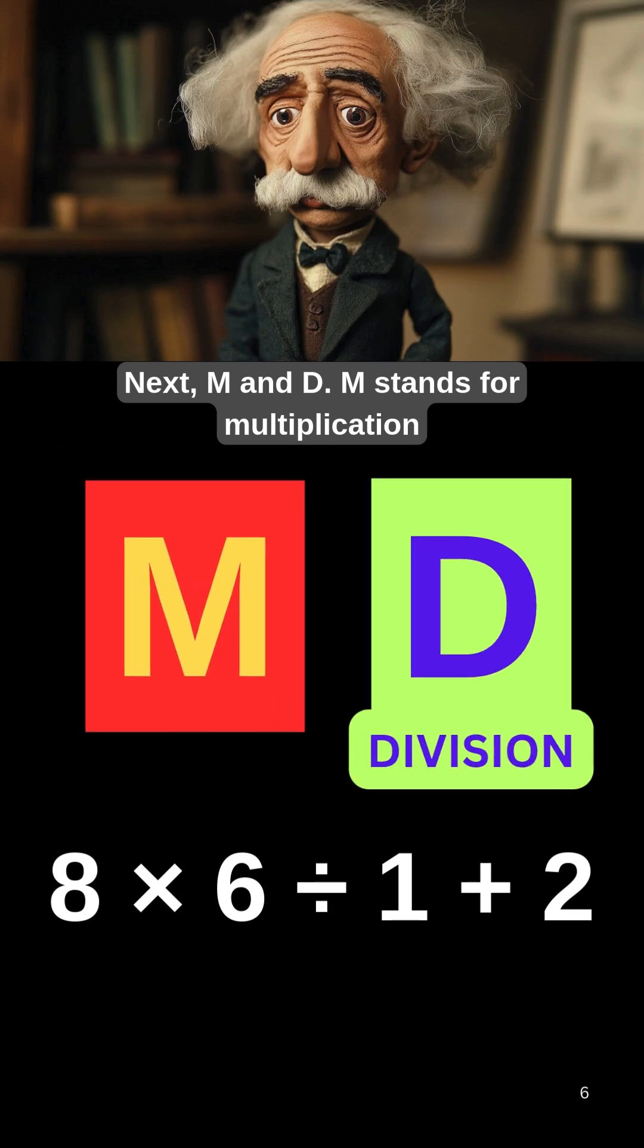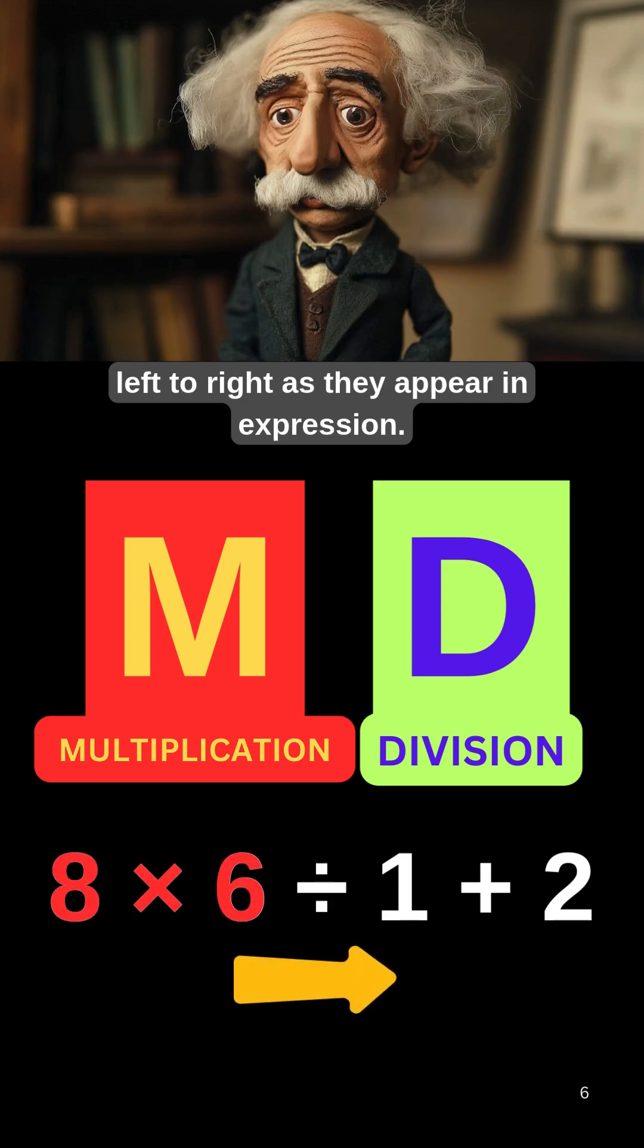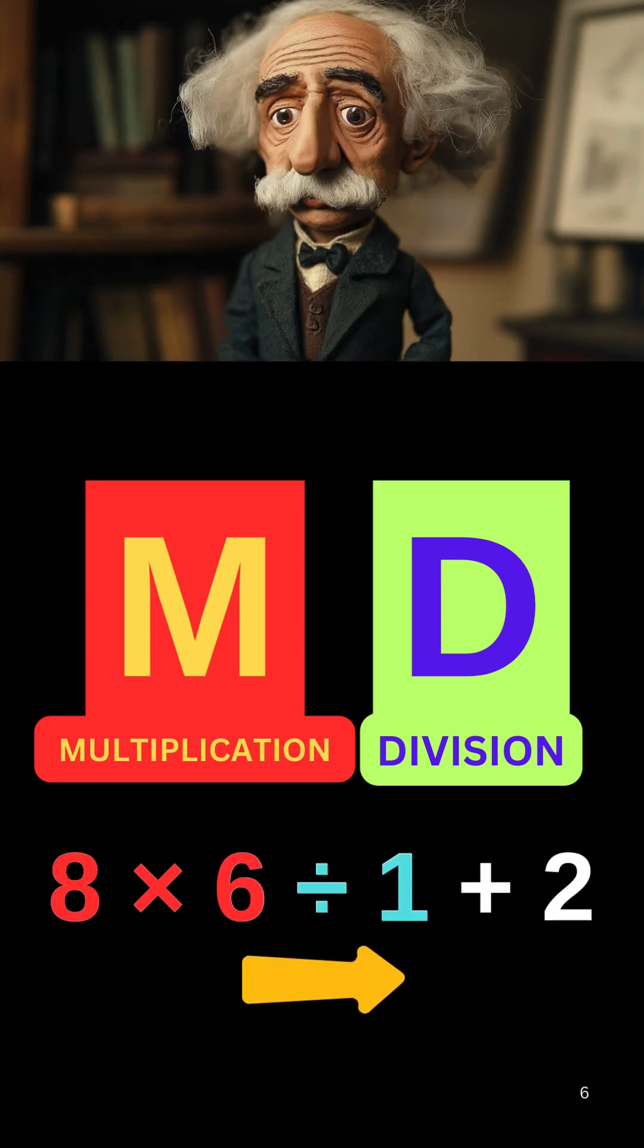Next, M and D. M stands for multiplication and D stands for division. They have equal priority. Perform them from left to right as they appear in the expression.